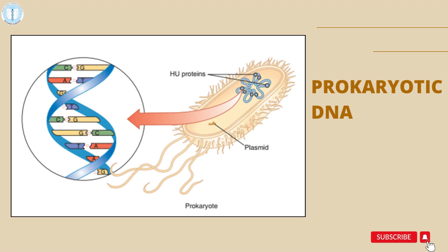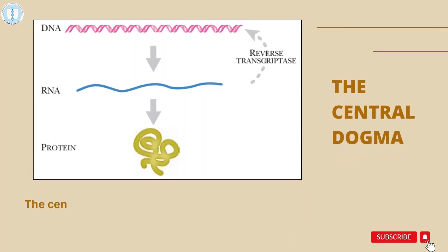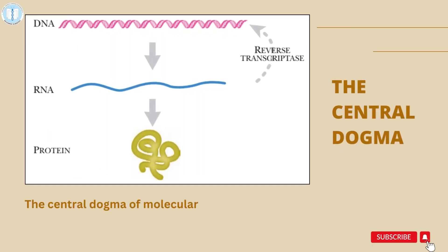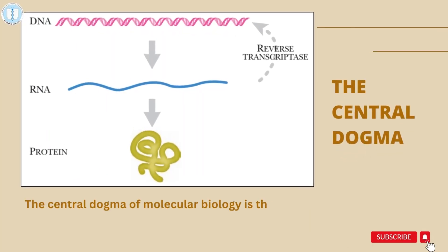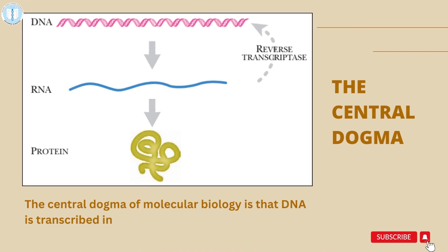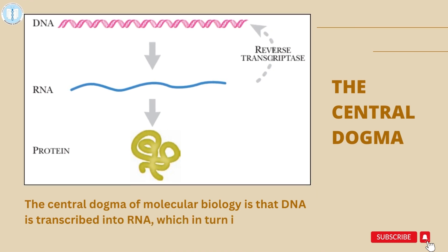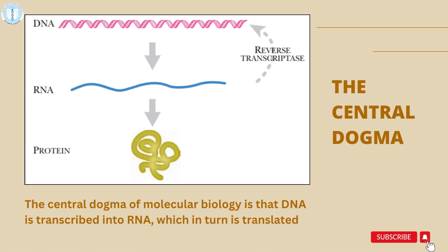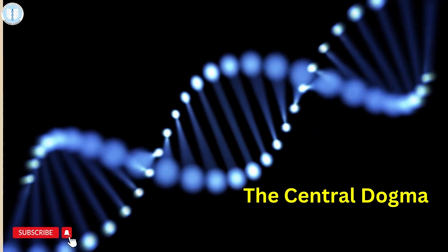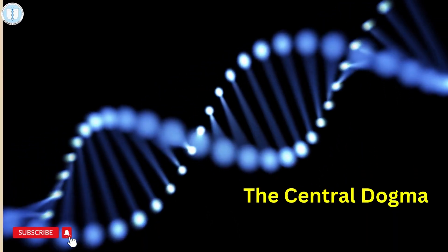As scientists began to understand the chemical makeup of the nucleic acids, an attempt was made to understand how DNA and RNA relate to inheritance, cell structure, and cell activities. The concept that resulted is known as the central dogma — the main belief or the source of all information.